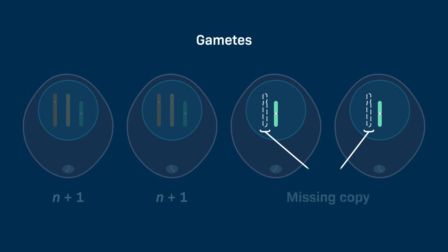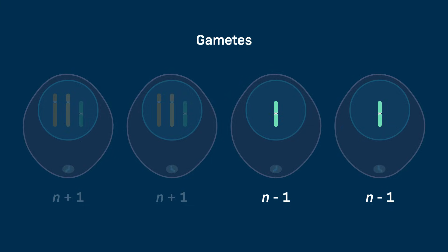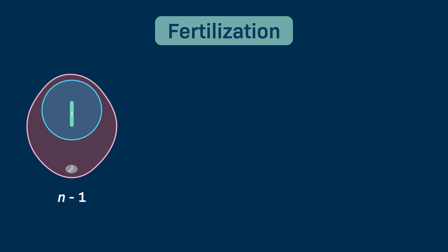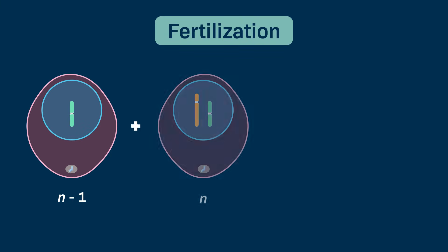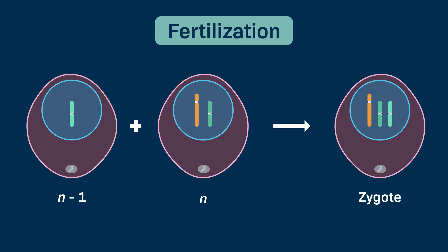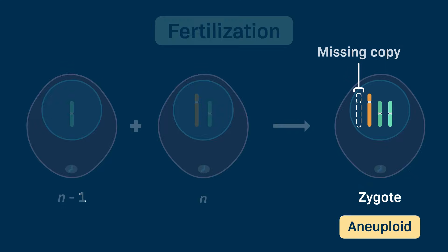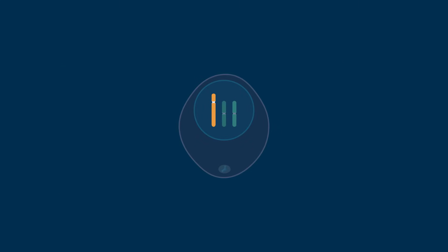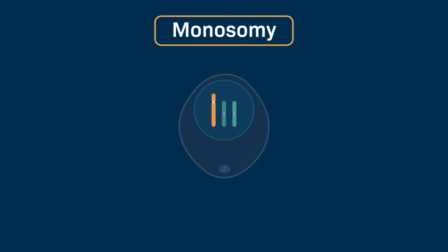Gametes that are missing a copy of a given chromosome are denoted as n minus 1. During fertilization, if an n minus 1 gamete fuses with a normal haploid gamete, the resulting zygote will also be aneuploid as it is missing a copy of a given chromosome. This loss of a copy of a given chromosome in a diploid organism is called monosomy and is denoted as 2n minus 1.